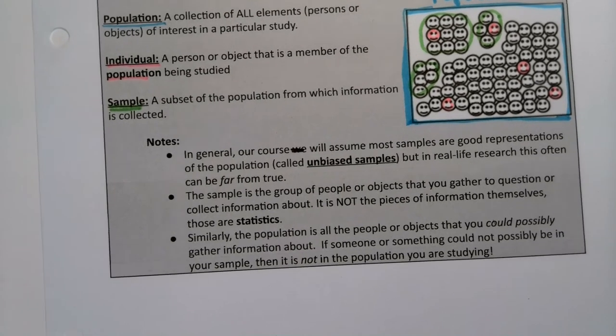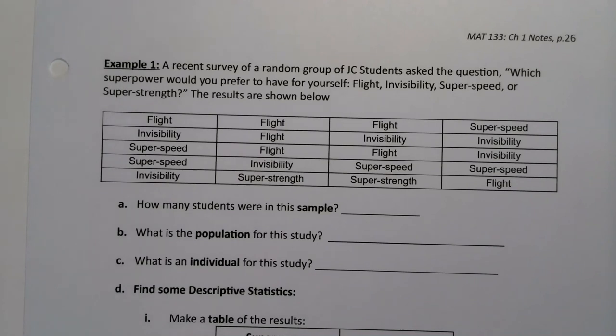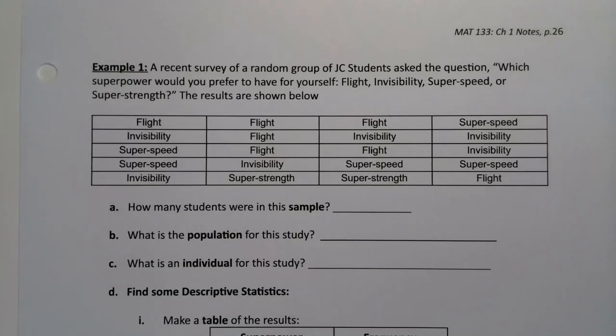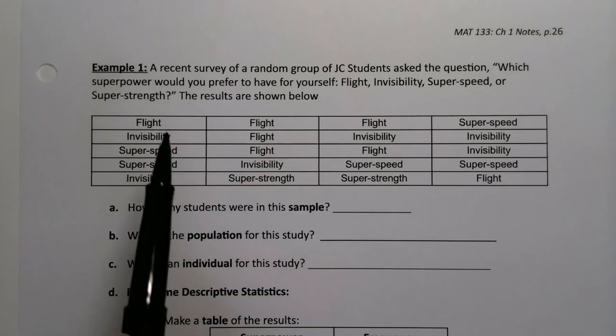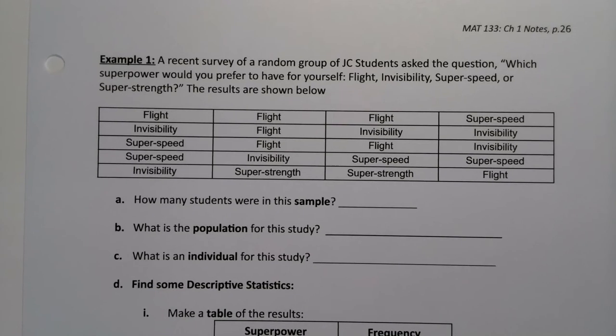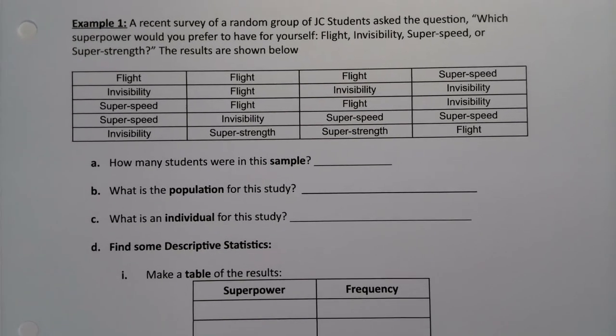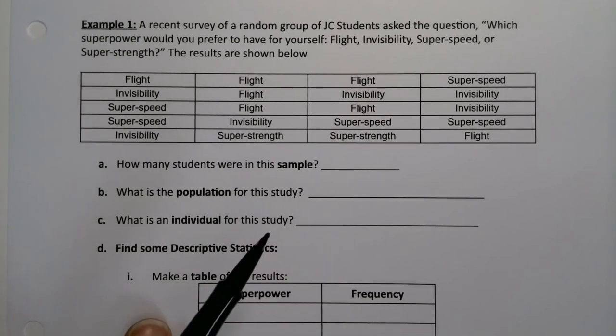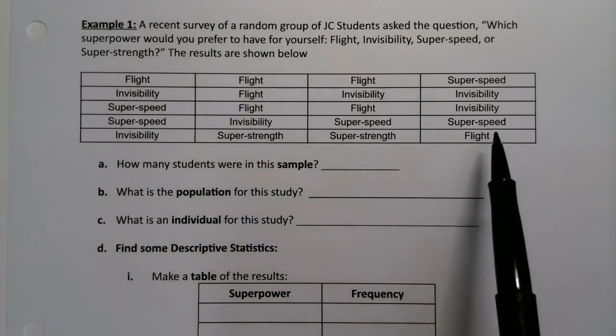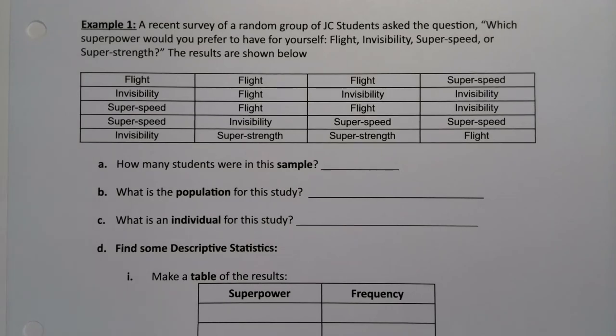I think all these definitions will become a little bit clearer if we look at an example. I have a recent survey of a random group of JC (Jackson College) students. They were asked the question: which superpower would you prefer to have for yourself? Flight, invisibility, super speed, or super strength? And the results are below. You can see these are the answers from the students. This is legit - I did ask this of a group of students. How many students were in the sample? We have 1, 2, 3, 4, 5 times 4 makes 20. So there were 20 students in the sample total.